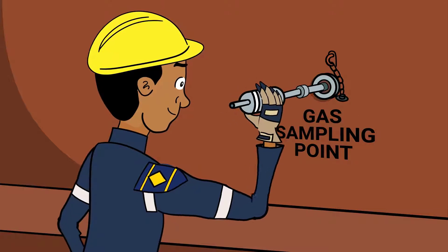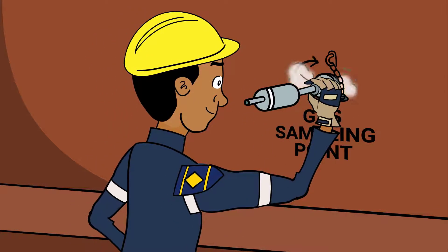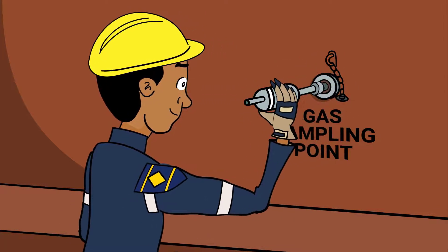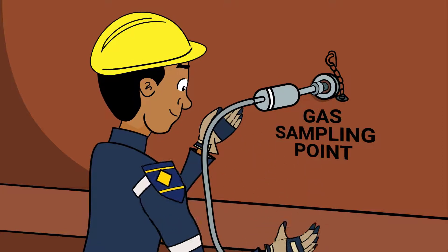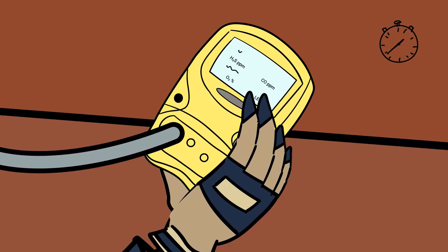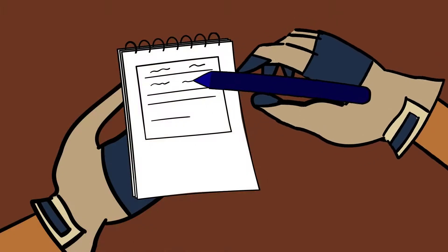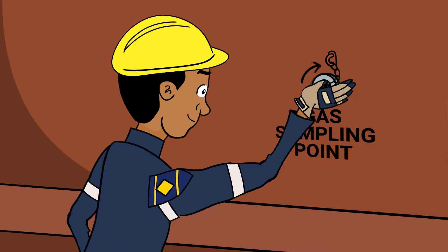Insert the spark-proof metal tube into the sampling point and ensure an airtight seal. Connect the sampling tube. Draw a sample until steady readings are obtained. Record the results. Replace the sealing cap.